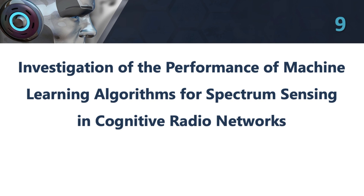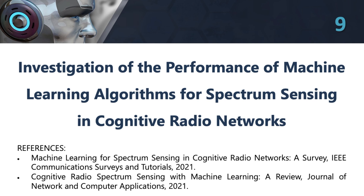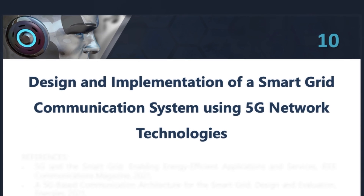9. Investigation of the performance of machine learning algorithms for spectrum sensing in cognitive radio networks. This topic involves exploring the use of machine learning algorithms for spectrum sensing in cognitive radio networks. The project could involve developing new algorithms that can learn from data collected by sensors and optimize spectrum sensing parameters to improve the performance of the network. The project could also involve evaluating the performance of the algorithms in real-world scenarios and comparing them with traditional spectrum sensing techniques.